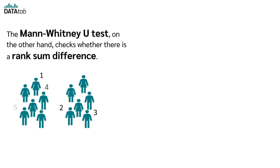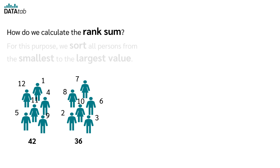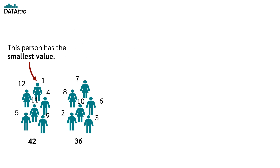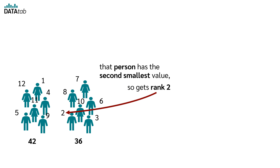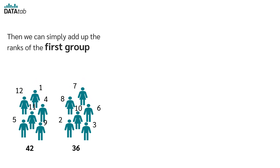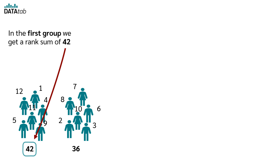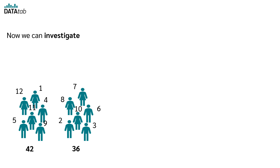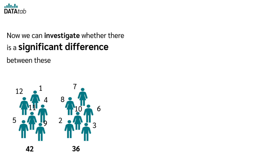The Mann-Whitney-U test, on the other hand, checks whether there is a rank sum difference. To calculate the rank sums, we sort all persons from the smallest to the largest value and assign ranks: rank 1 to the smallest, rank 2 to the second smallest, rank 3 to the third smallest, and so on. Then we add up the ranks of the first group and the second group. In the first group we get a rank sum of 42, and in the second group a rank sum of 36. We then investigate whether there is a significant difference between these rank sums.